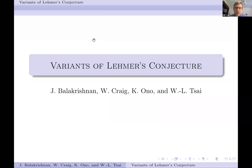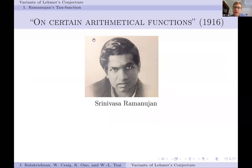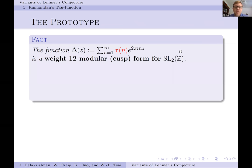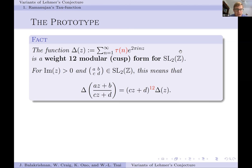We begin with Ramanujan, as we often do in number theory, specifically his paper on certain arithmetical functions from 1916. In this paper, he introduced the tau function and the delta function. We see here the tau function defined by the coefficients of this infinite sum, which is also viewed as an infinite product. This function, called the delta function, is a weight 12 modular form for the modular group SL2Z, and it is in fact also a cusp form.